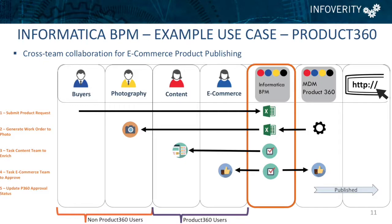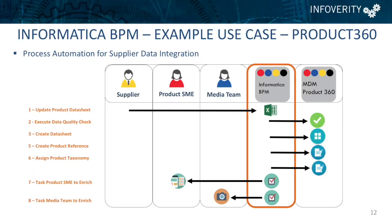That workflow was actually built and has been a great help. Here's another example: bringing data in from a supplier where BPM does a lot of the initial setup — running data quality checks, creating data sheets, product references, and taxonomy assignments. Once the system completes all that initial work, product experts and the media team are brought in to provide content and approval of that new supplier data. These examples give you a sense of real-world business processes that have been modeled in BPM.